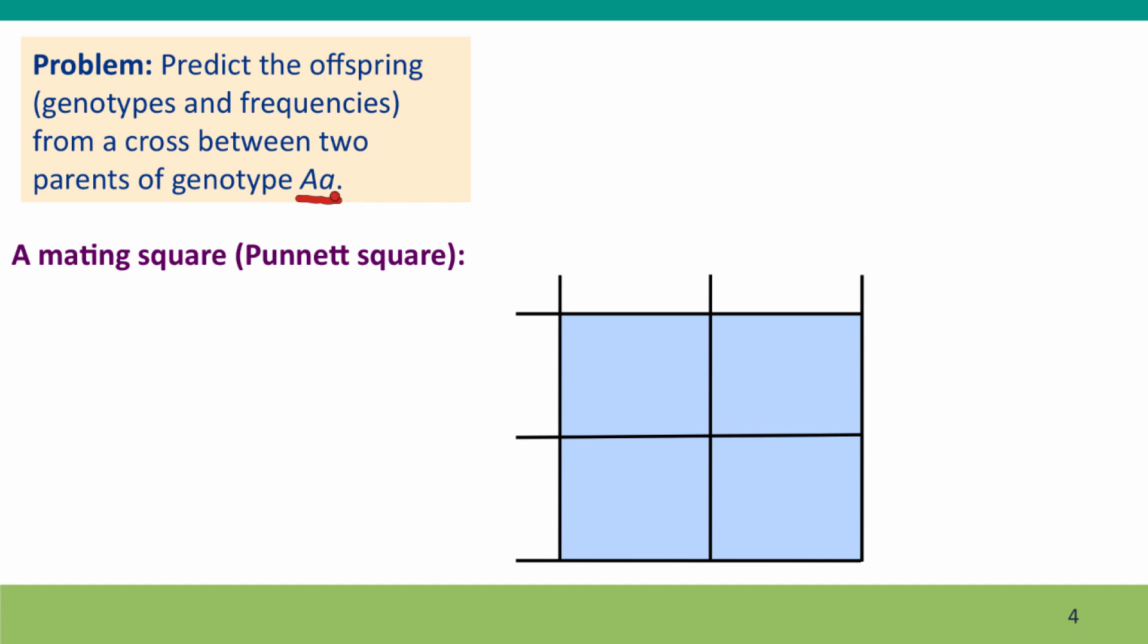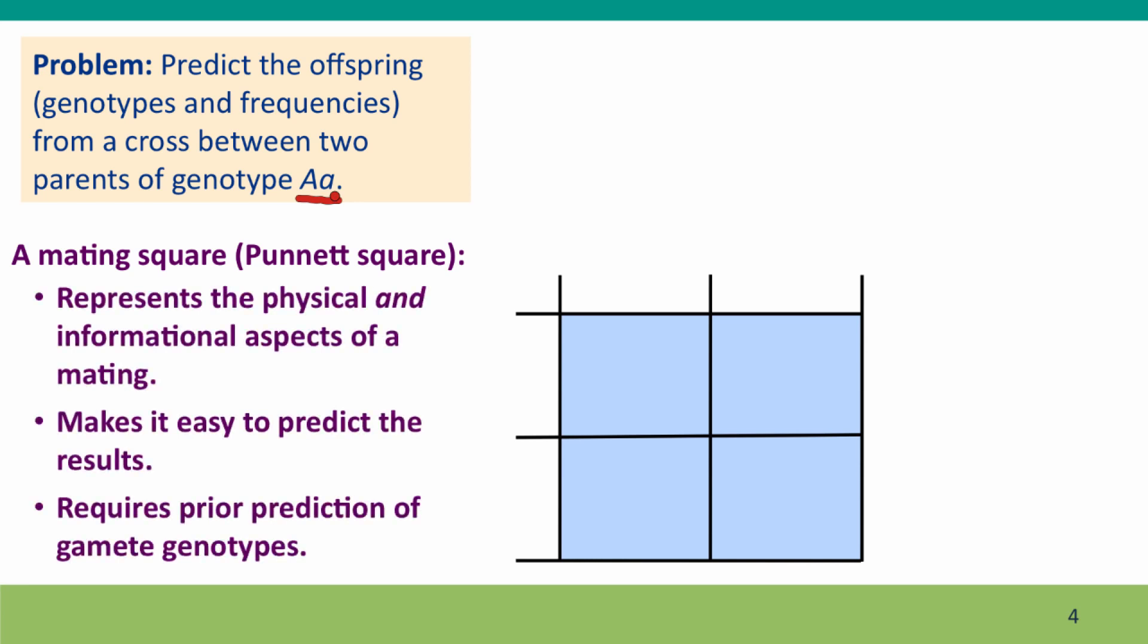We're going to use a mating square and that square diagram accomplishes several things. It represents the physical aspects of mating, the physical coming together of the gametes, and it represents the informational aspects of the mating, the actual genotypes of those gametes. In doing so, it makes it easy to predict what the genotype of each kind of progeny is going to be.